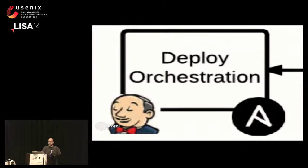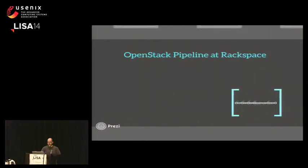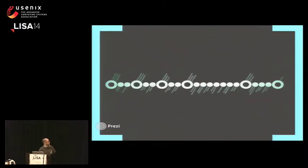Finally, we get to the deploy orchestration, which is Ansible driven by Jenkins, that will take that content and make it live in the production regions. Before we get into what a deployment looks like, let's talk a little about the pipeline for how things get done. There is a pipeline — it may be hard to read. It's very hard to read, so let's zoom in a little bit.